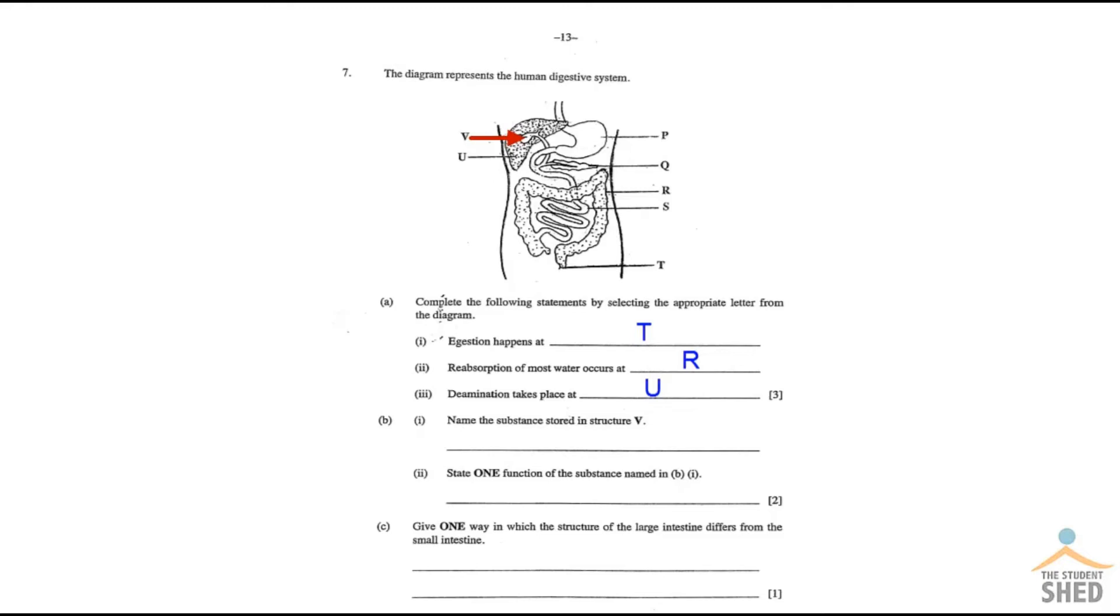That structure there you can see is called the gallbladder. Now what substance is stored in the gallbladder? The answer, of course, is bile. Just like that, that's all you need to say.